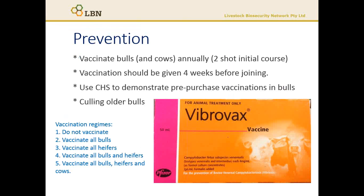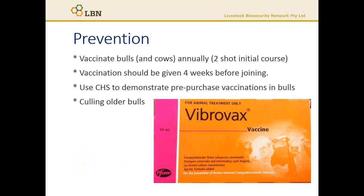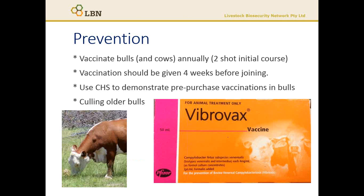In cattle, ideally prevention is all about vaccination. There are five options that range from no vaccination to vaccinating all bulls, heifers and cows in high-value herds. Vaccination is an initial two-shot course, four to six weeks apart, and then a yearly booster after that. Ensuring new bulls are vaccinated and fully vaccinated prior to arriving on your property is the best biosecurity practice, supported by vaccination declarations found on cattle health statements. Vibrio is also one of the vaccines that will cause a vaccination lump in cattle. Culling older bulls will also help reduce the risk of passing on infection to heifers, particularly in unvaccinated herds.